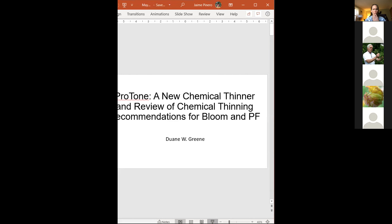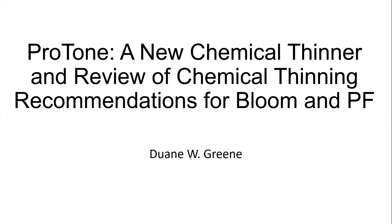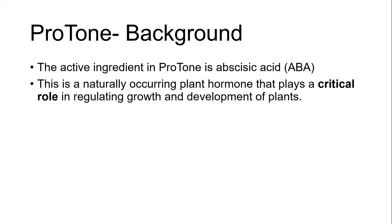What I'm going to talk about this evening is two things: the new chemical thinner Proton, and also bloom and petal fall thinning. Proton is actually a hormone — abscisic acid — a naturally occurring product that plays a critical role in regulating growth and development of plants. It's one of our most important hormones and plays a lot of roles.